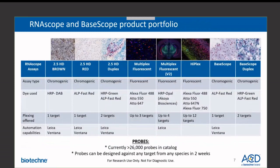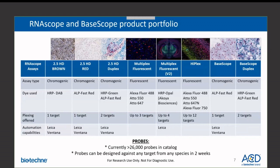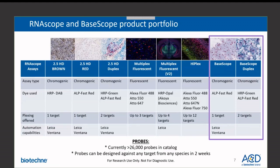This slide summarizes all the assays currently available from ACD. We have chromogenic single-plex brown or red assay and duplex assays on both manual and automated platforms. The multiplex fluorescent assay allows detection of up to four targets simultaneously in a single tissue section. The V2 fluorescent assay is also available on the Leica automated platform. For higher plexing, we have the high-plex assay enabling detection of up to 12 targets simultaneously in a single tissue section, currently available on the manual platform only. If your target of interest is shorter than 300 nucleotides and you're studying splice variants, short targets, or point mutations, then the BaseScope assay is the right choice. The BaseScope single-plex assay is available on all platforms, while the duplex assay is available on the manual platform.